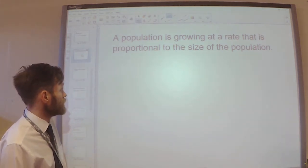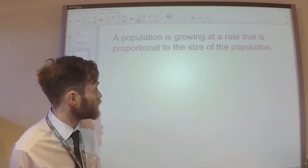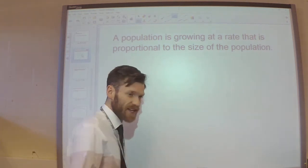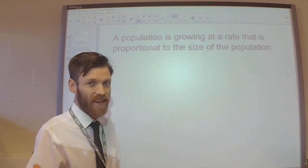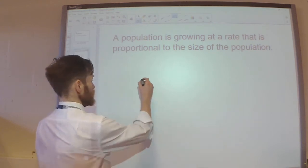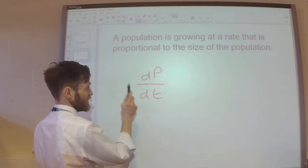We have a population is growing at a rate that is proportional to the size of the population. So, the population, let's call that P, and that's growing at a rate. So, that means dP by dt, growing at a rate.